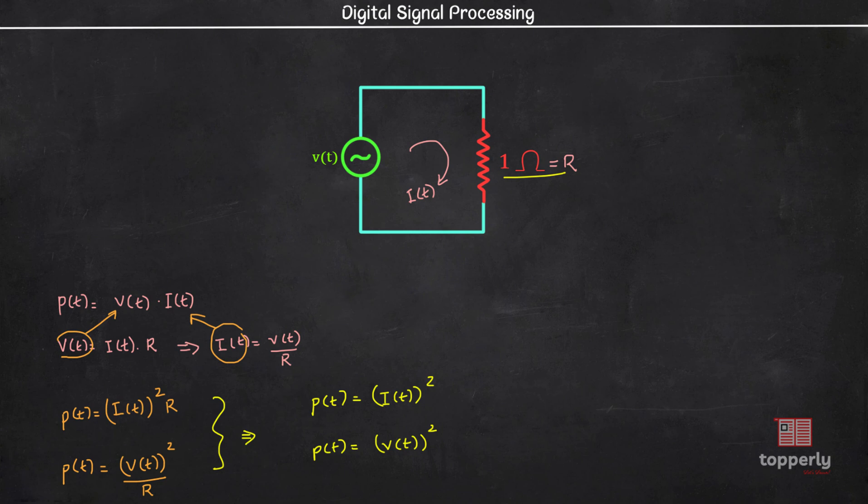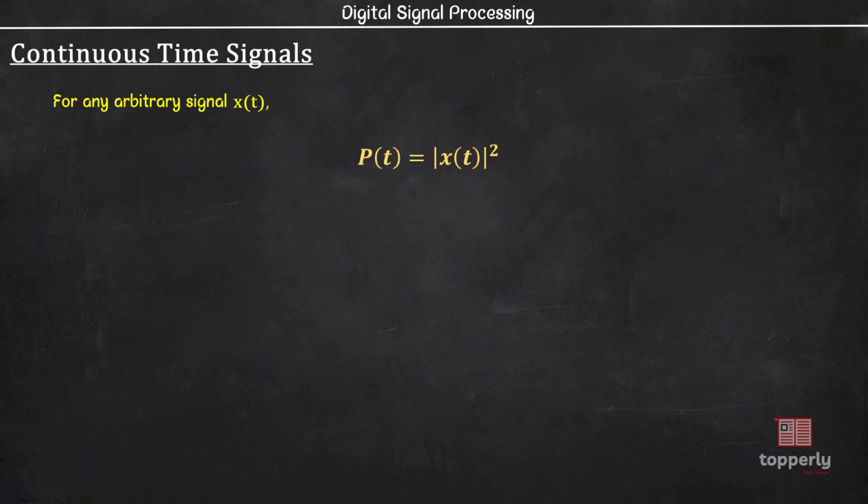Now in signal processing we are conceptually extending these ideas to any signal. So in general, if we have an arbitrary signal X(t), then the instantaneous power of this signal is defined as P(t) equal to magnitude of X(t) squared. So this is the equation for instantaneous power.